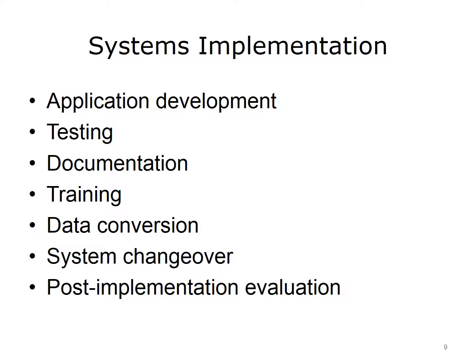System changeover is the process of putting the new information system online and retiring the old system. Before the system changeover can occur, the new system must be tested and documented carefully, users must be trained, and existing data must be converted. The changeover can happen quickly or slowly depending on the method used. Direct cutover, parallel operation, pilot operation, and phased operation are examples of changeover methods. Although these methods are not covered here in depth, they provide an indication of the complexity of systems implementation.